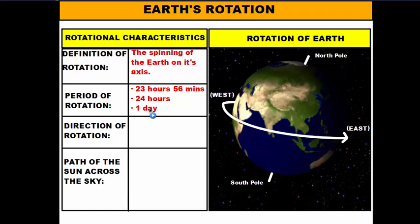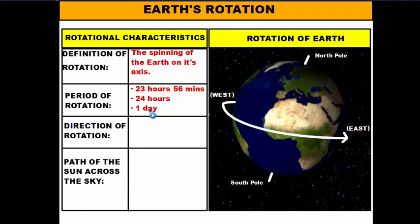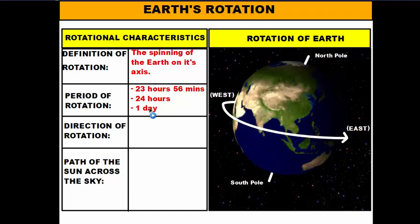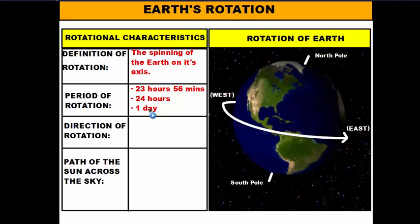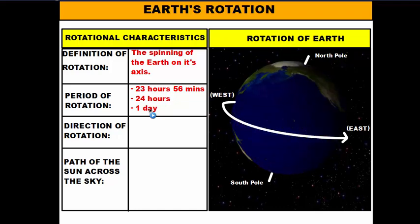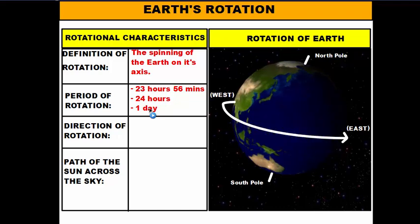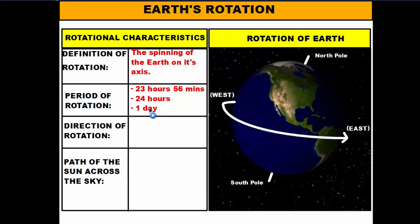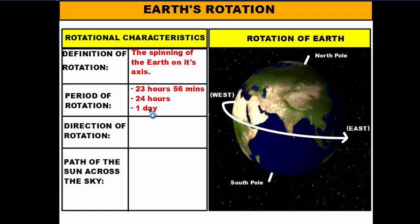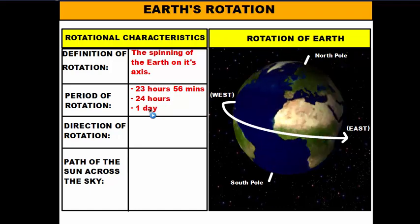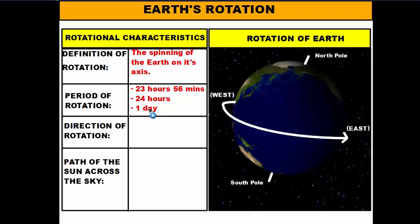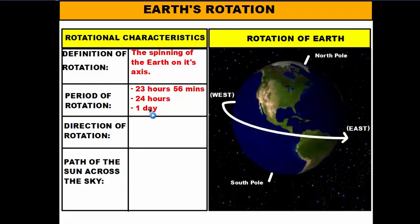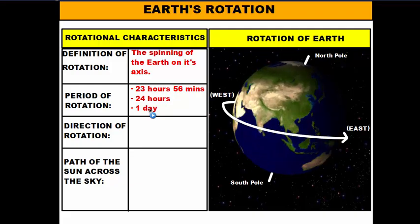It takes the Earth one day to complete one spin. When the calendar switches from Monday to Tuesday, that marks one complete spin of the Earth. Tuesday to Wednesday is another complete rotation, and Wednesday to Thursday is another. The Earth will have 365 and one quarter rotations in a year.